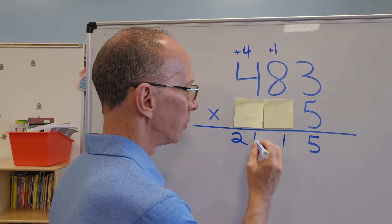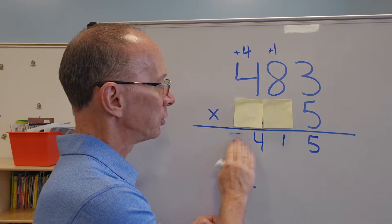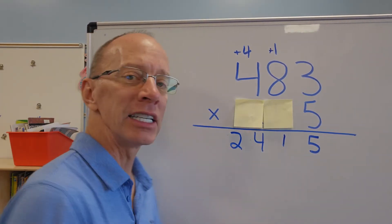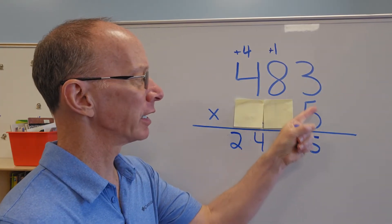All right, so I write twenty-four right there. Now, I better make that two a little bit neater. Always remember to try to be as neat as possible when you're doing mathematics. Now, I just finished multiplying the five.